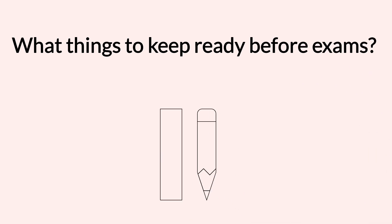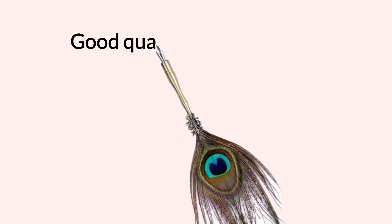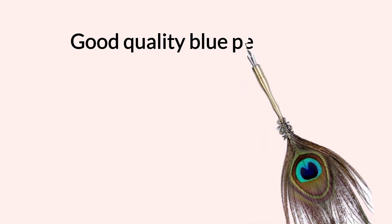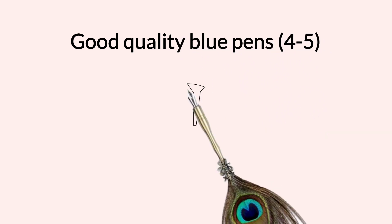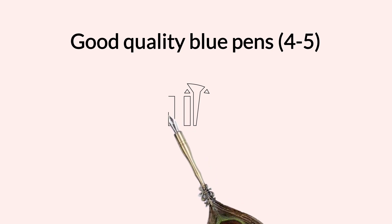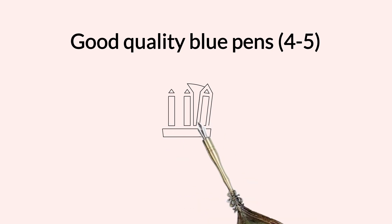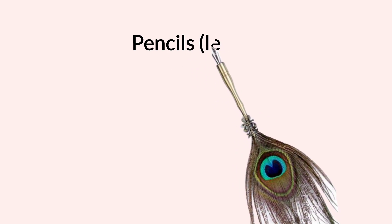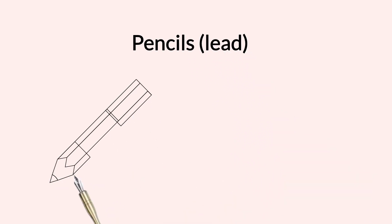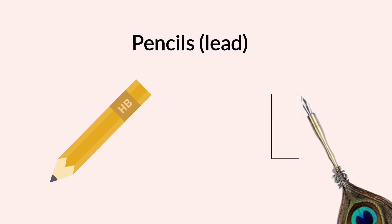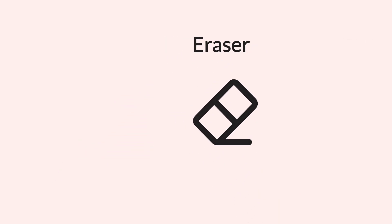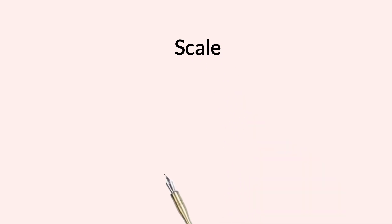What things to keep ready before exams? If exams are battles, pens are the weapons. It is very important to keep good quality pens. Use blue color pens instead of black. Keep 4 to 5 pens with you. Use pencils, especially lead pencils, to draw margins and diagrams, and to underline important points. Keep an eraser with you. A scale is important to draw diagrams and margins, and to underline.